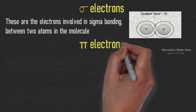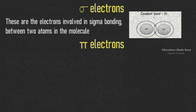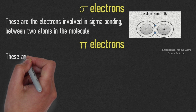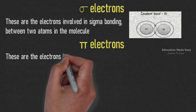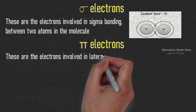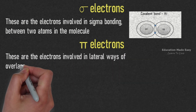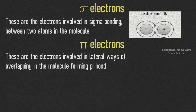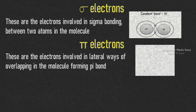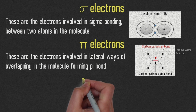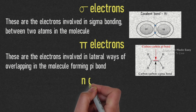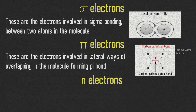Pi electrons are the electrons involved in lateral waves of overlapping in the molecule forming a pi bond. For example, the carbon to carbon pi bond in C2H4 molecule is made with pi electrons.